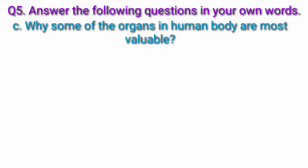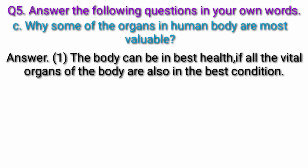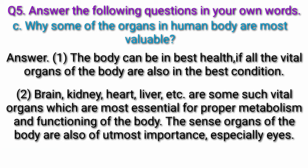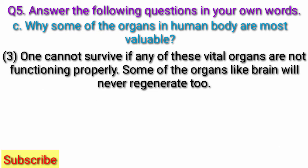Question C: Why are some of the organs in the human body most valuable? Answer: The body can be in best health if all the vital organs are also in the best condition. Brain, kidney, heart, liver etc. are some such vital organs which are most essential for proper metabolism and functioning of the body. The sense organs of the body are also of utmost importance, especially eyes. One cannot survive if any of these vital organs are not functioning properly.